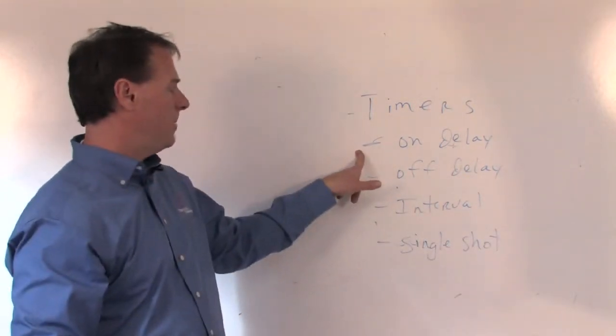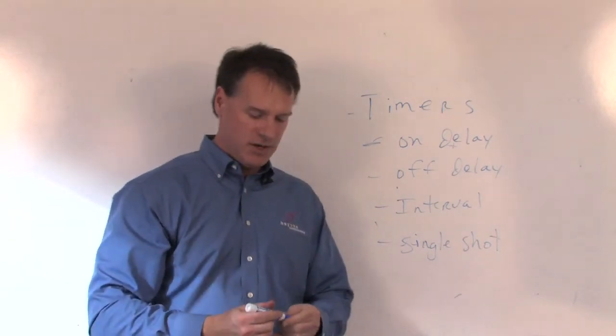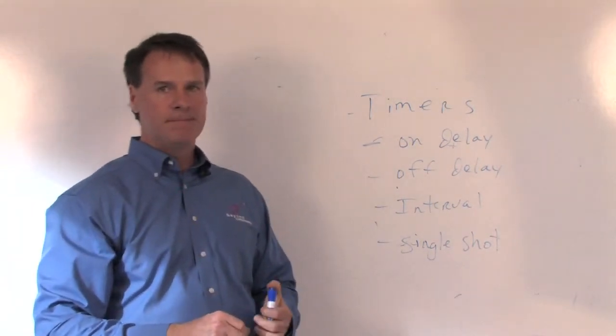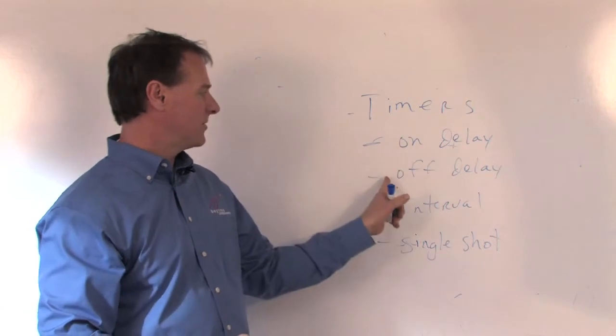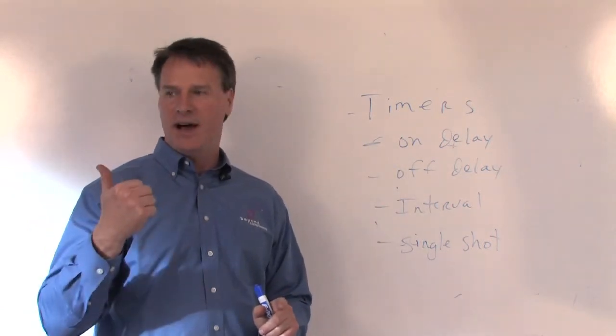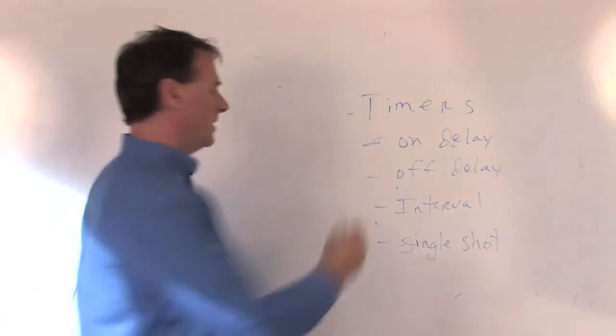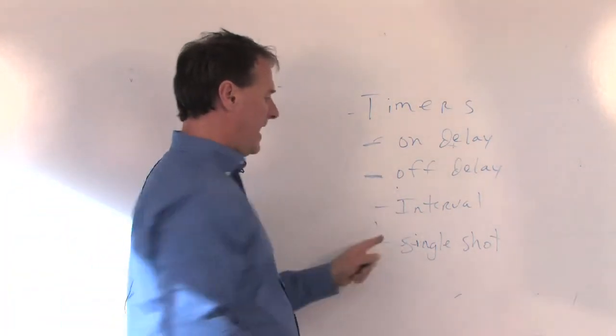An on-delay and an off-delay. So an on-delay is— let me give you an off-delay example first. Your car. You shut your lights off in your car and you have 60 seconds to get in the house and then the lights go off. That's an off-delay timer. There's a timer in your car. It's an off-delay.